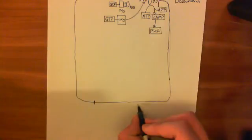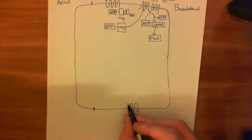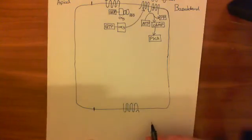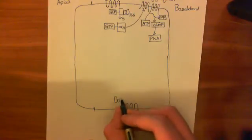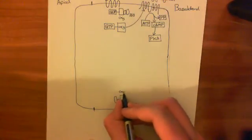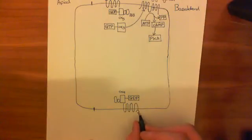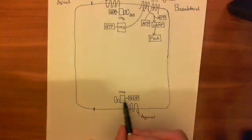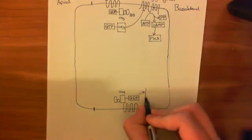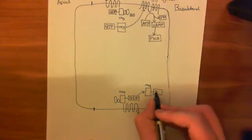The other G protein coupled pathway: you start off with a G protein coupled receptor — a 7-transmembrane receptor — and this time it is coupled to the G protein alpha-Q rather than alpha-S. So alpha-Q is initially bonded to GDP. When an agonist for this receptor comes in, the G protein coupled receptor becomes catalytically active, and it's going to convert alpha-Q GDP into alpha-Q GTP — breaking off the GDP and replacing it with a GTP.